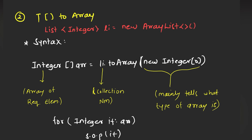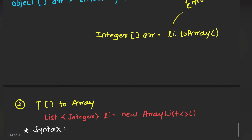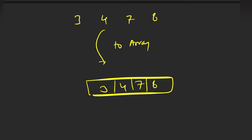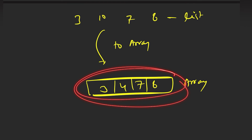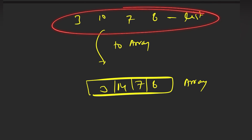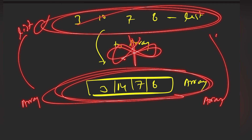One important thing about these toArray methods: say my list is 3, 4, 7, and 8, and I convert it into an array. When we convert using the toArray method, there is no relationship between this list and this array. If I make any changes in my list — say I insert 11 in place of 4 — there will be no effect on my array. Similarly, if I change the array, there will be no effect on my list. The list has a separate memory space and the array has a separate memory space with no connection between the two.